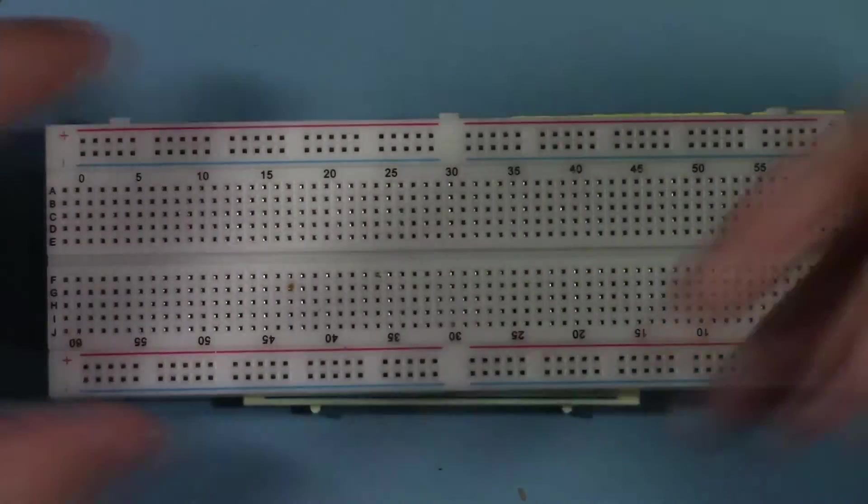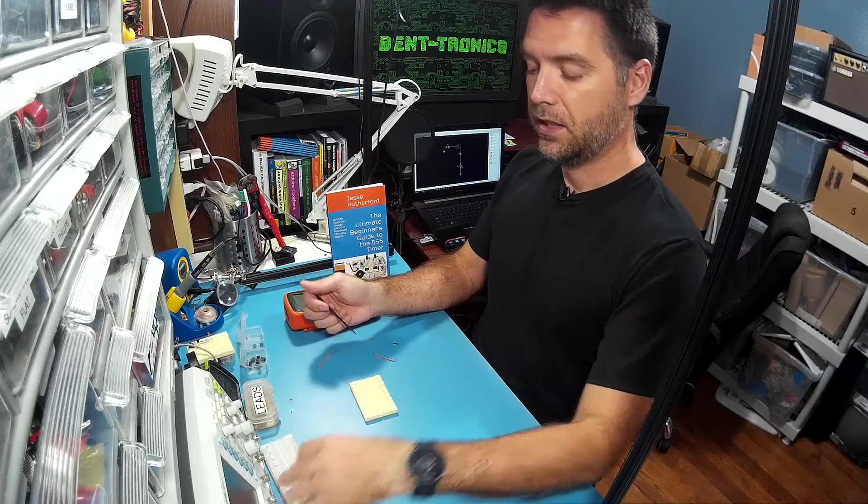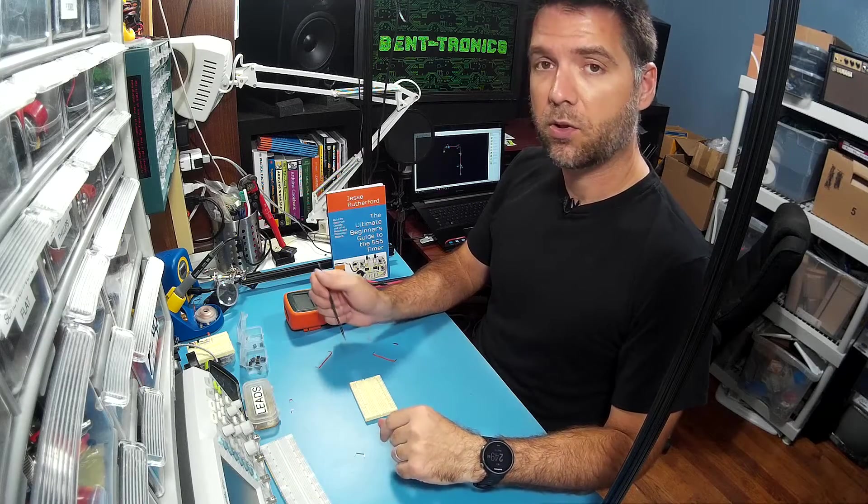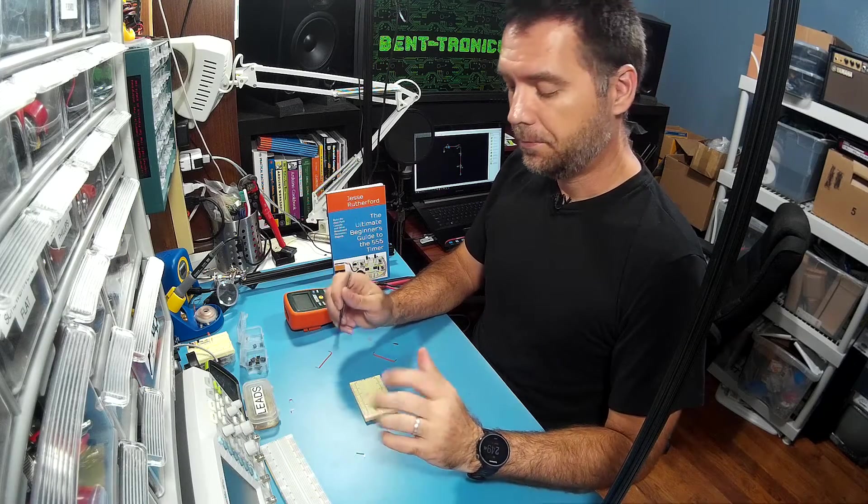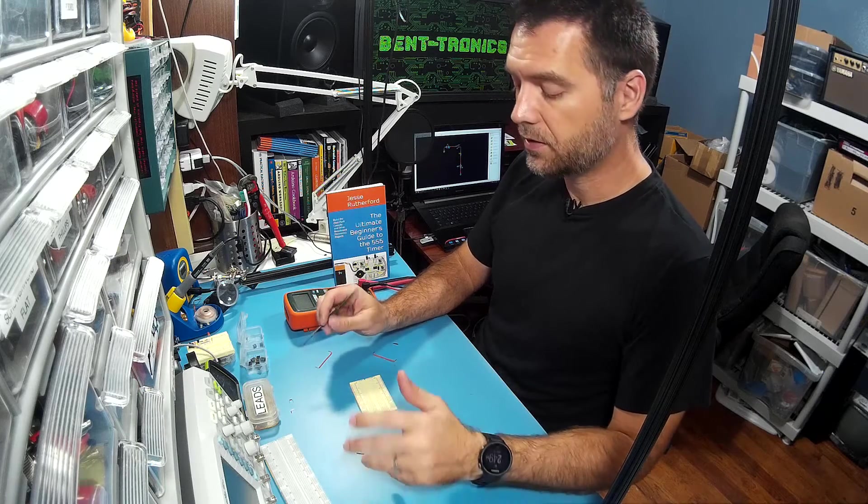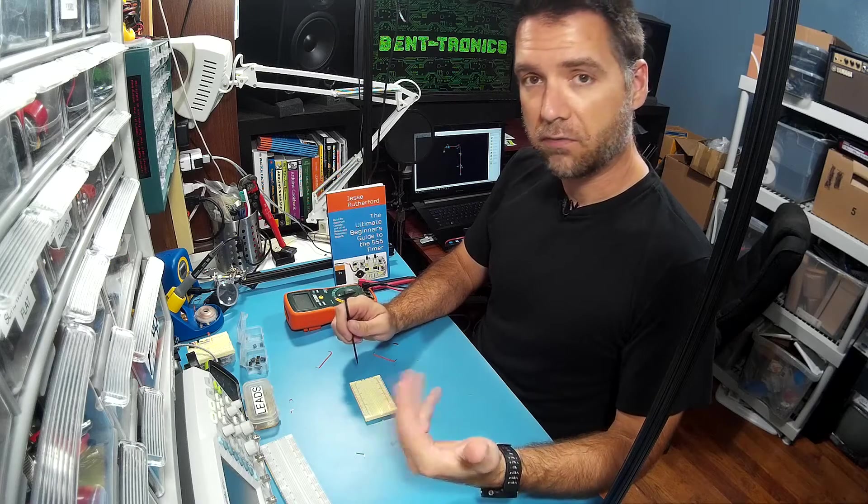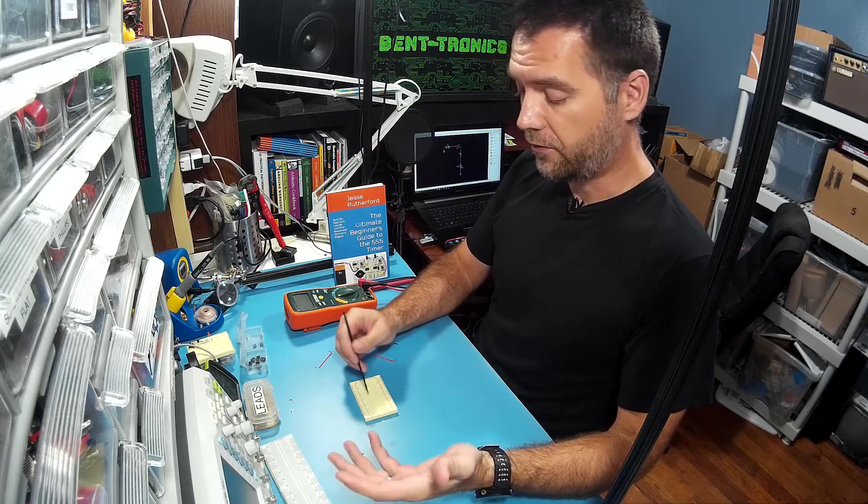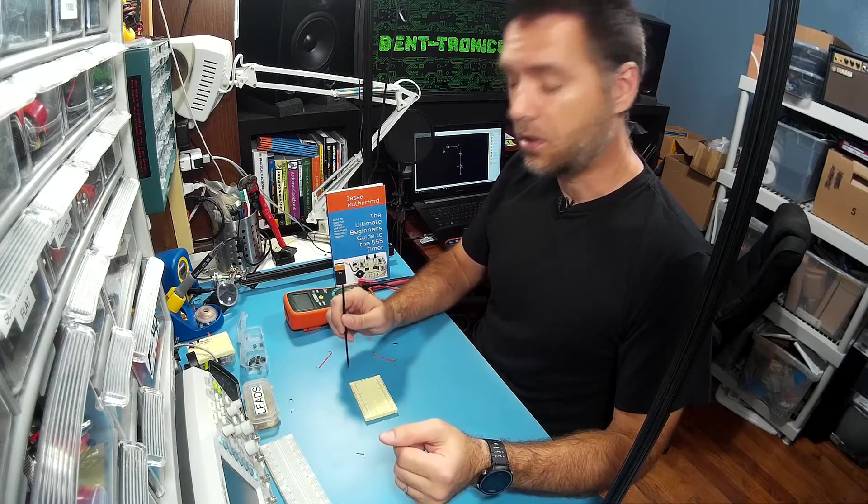This one is quite a bit bigger, and they come a lot bigger than this even. They come smaller than this 400 point one, but basically when it gives a number and then it says points or tie points, they're referring to how many holes, for lack of a better term, are on this breadboard.